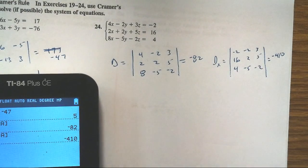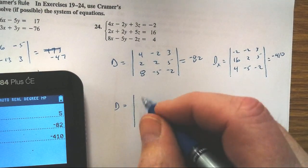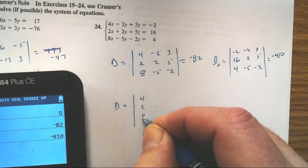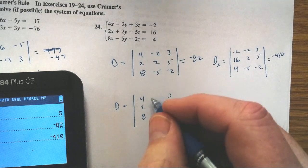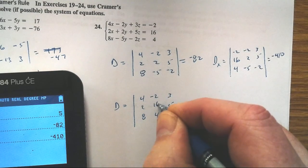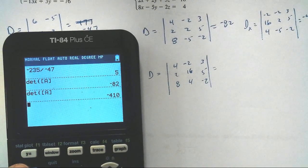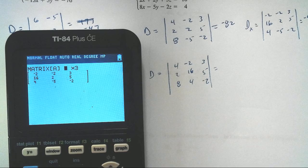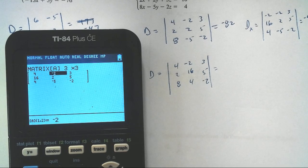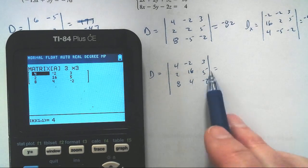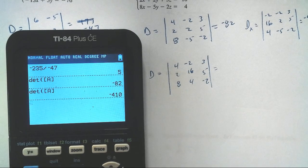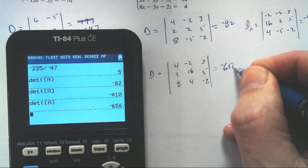D-sub-y: keep the x-column original (4, 2, 8) and z-column original (3, 5, negative 2), but replace the y-column with the constants negative 2, 16, 4. Entering: 4, negative 2, 3; 2, 16, 5; 8, 4, negative 2. The determinant is negative 656.